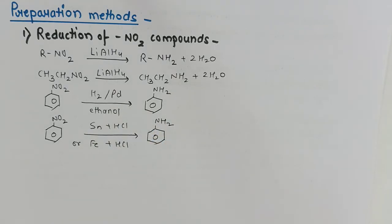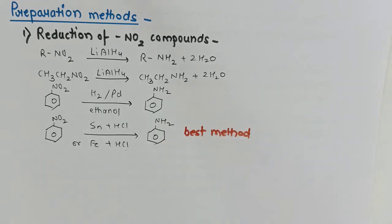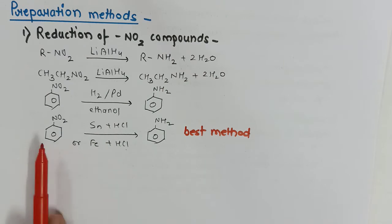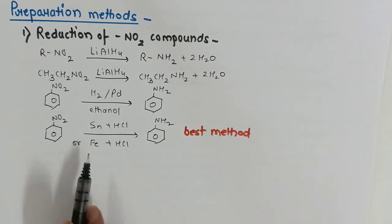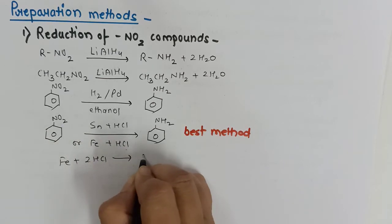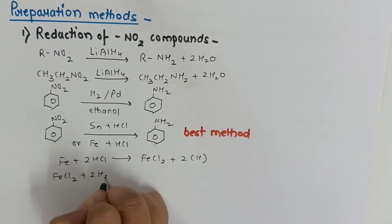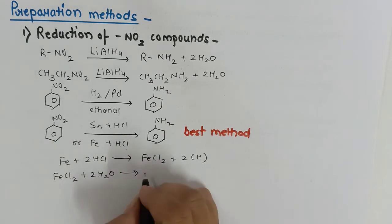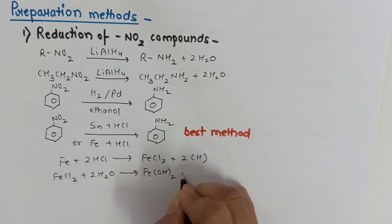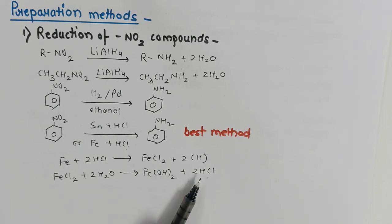Tin/HCl or iron/HCl can also be used for reduction of nitrobenzene to give aniline. Using iron scrap with HCl is the best method for preparation of aromatic amines. In this process, FeCl2 is formed, which can be converted back to give HCl for reuse. All reactions in which byproducts can be reused become commercially very important — that is why reduction of nitro compounds is the best method for aromatic amines.